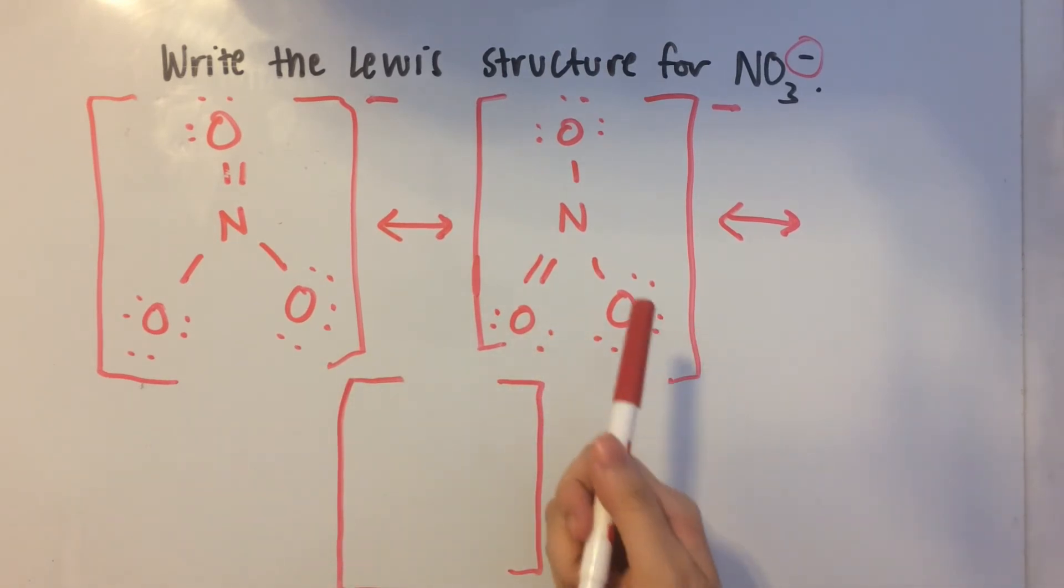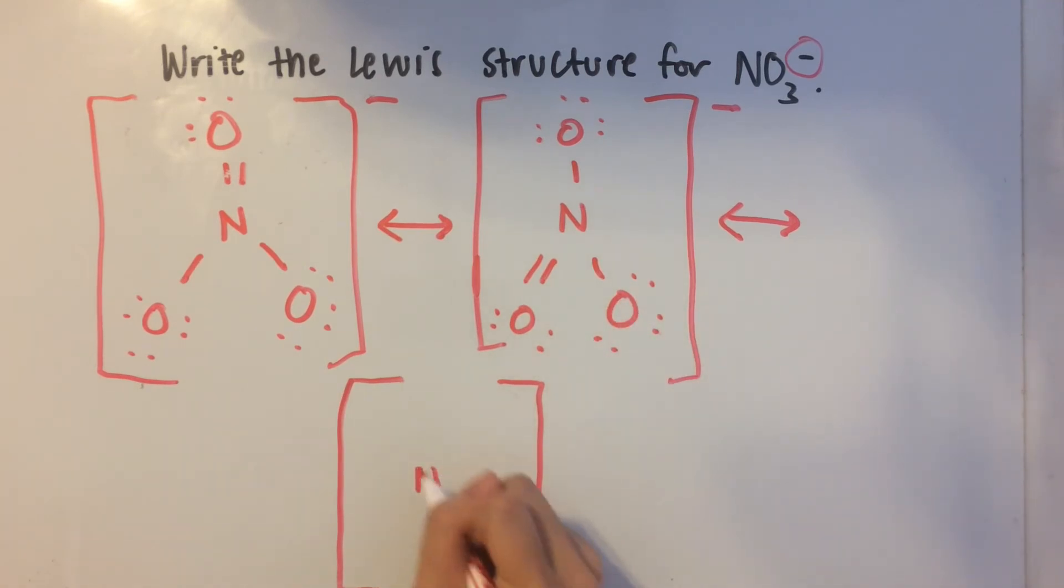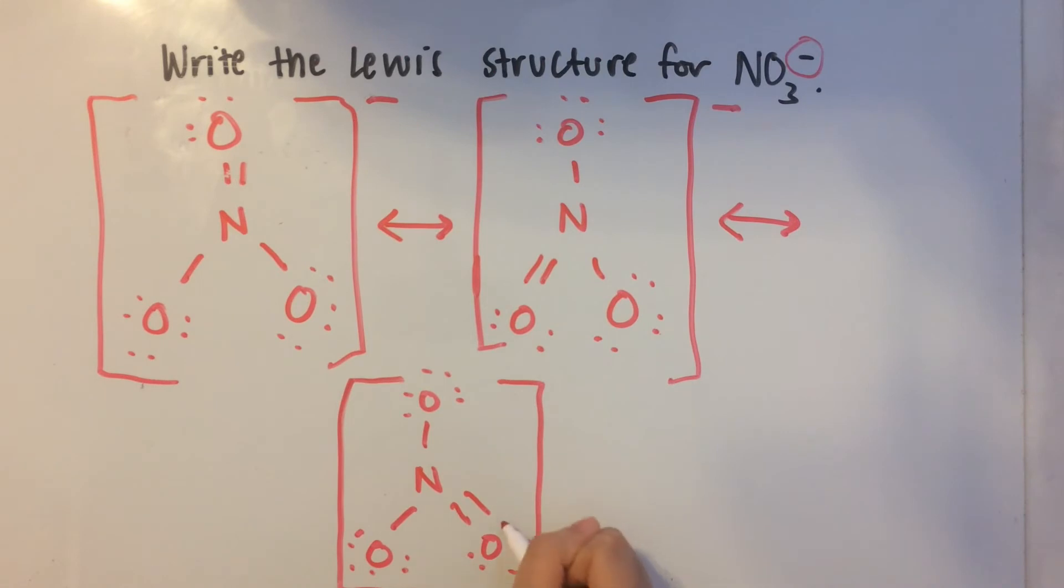And of course, this oxygen is going to get the double bond now. So it looks kind of like this. I'm drawing it as fast as I can. And that's the last resonance structure.